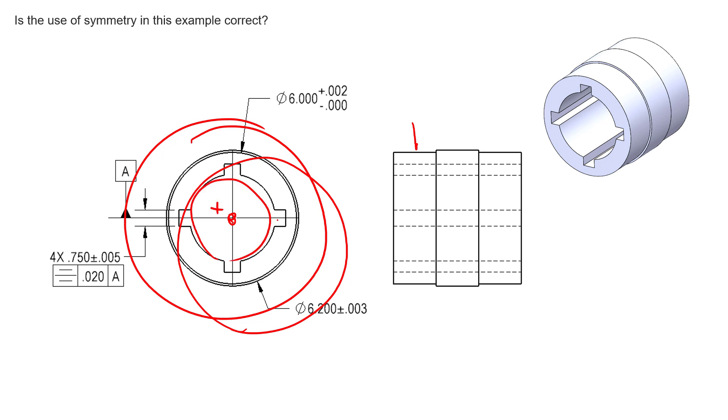Each one of those features will have their own axes and could create separate datum axes. So by simply attaching the symbol to an axis or a centerline on a drawing, you're not clearly identifying which of those features is the most important feature.